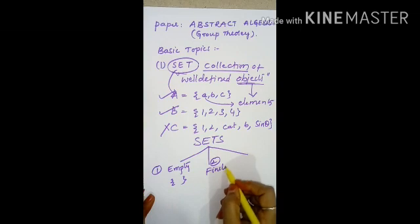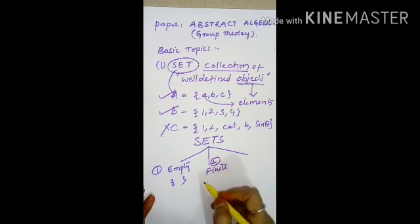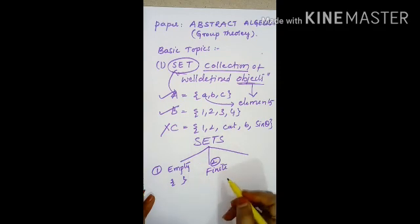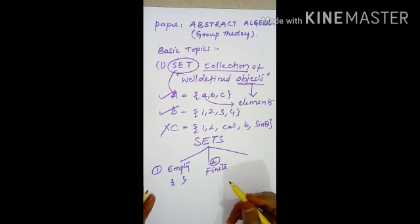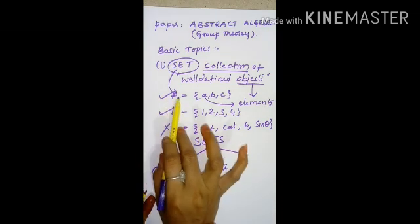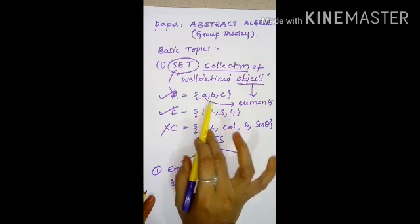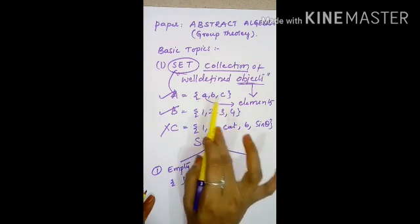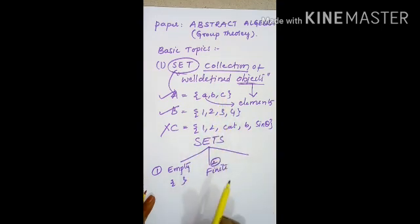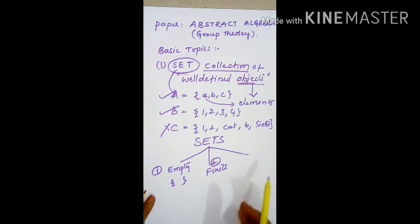Number 2, finite set. What is a finite set? If the set consists of countable number of elements. For example, if you consider set A, the number of elements in this set are 3. We can count it 1, 2, 3. That means if we can count the elements in the given set, then it is finite.